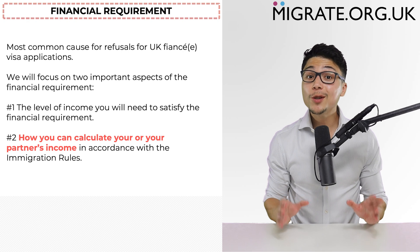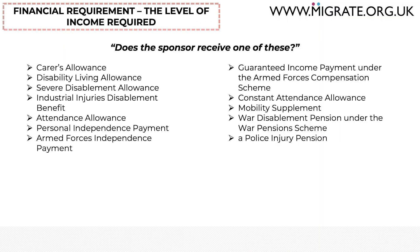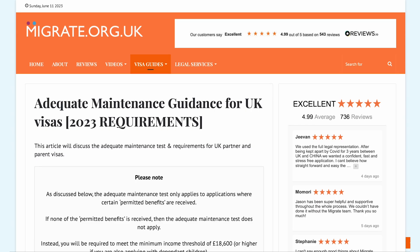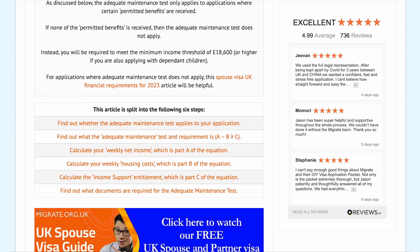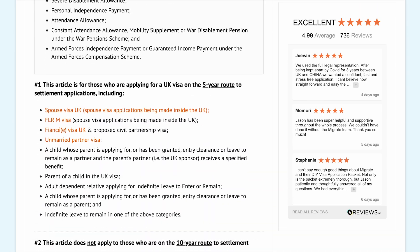How much income will you need to satisfy the fiancé visa financial requirement? You must first ask yourselves whether the sponsor — the UK partner — receives any of certain permitted benefits, whether on behalf of their child or not. If the sponsor does receive one of these, you'll be glad to hear that you must show much less income than is ordinarily required. This is because the adequate maintenance test applies. For more information, I would recommend reading our adequate maintenance test guidance on our website, migrate.org.uk, where we break this down step by step.